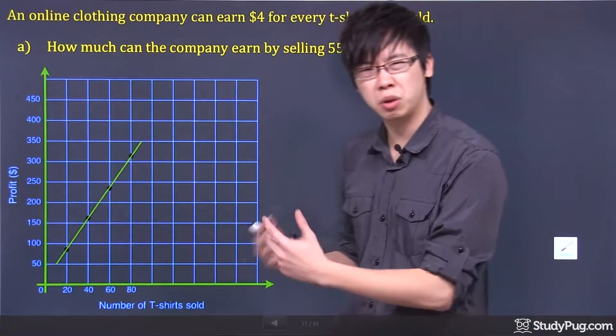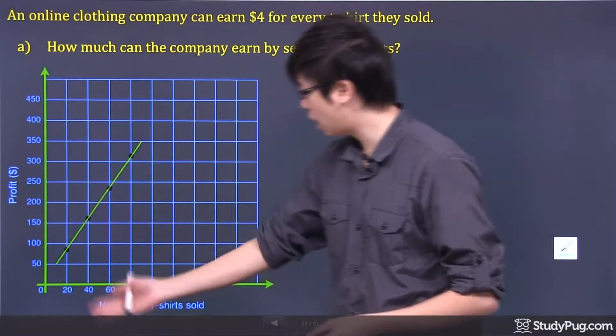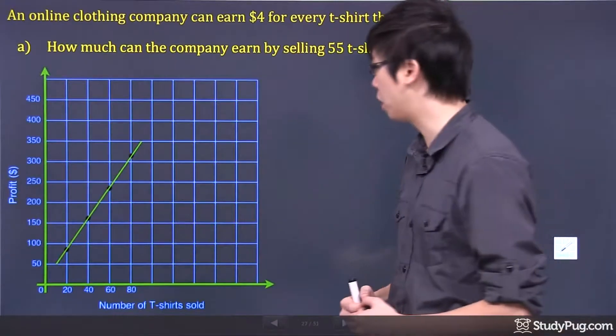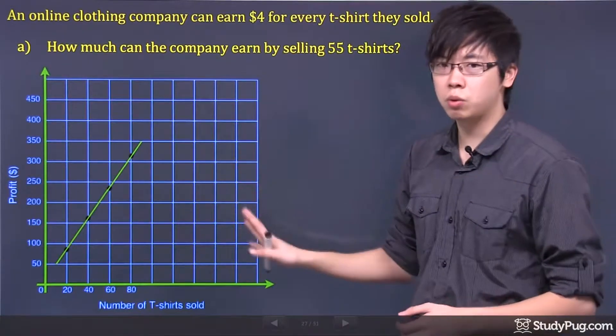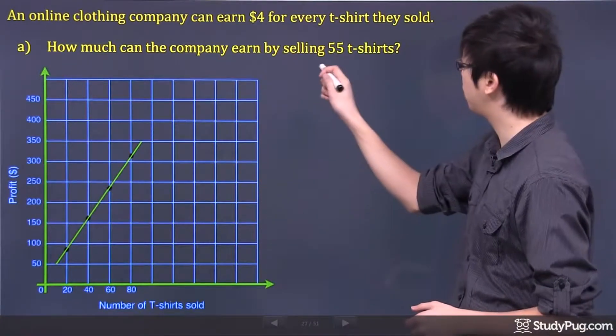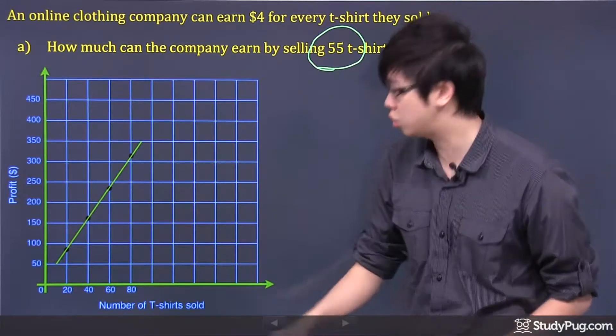So we got a graph here trying to tell us the relationship between the profit and the number of t-shirts that it sold, right? So graphically, if you want to solve it graphically, you just have to focus on the number they give you, 55 t-shirts.